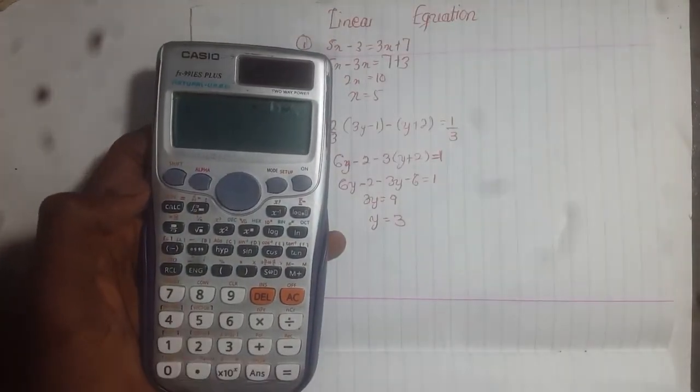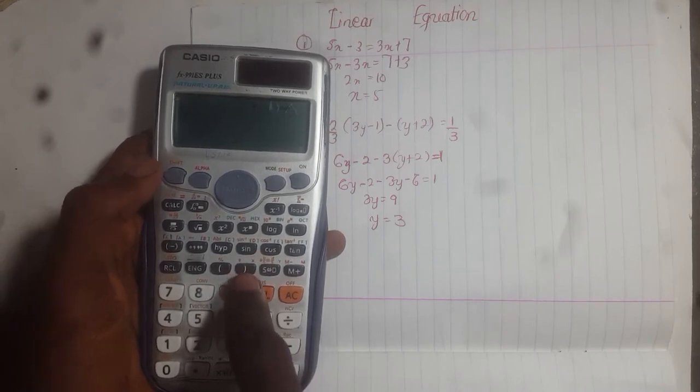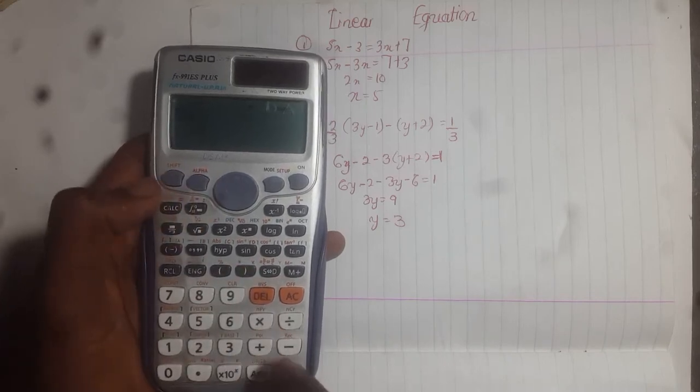So I'll press my 5. Then when you look on top of the bracket, you can see x in red. So I press alpha and I use x. So you always use x minus 3.